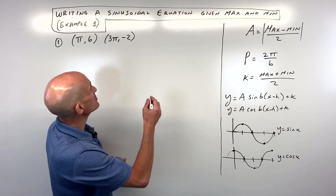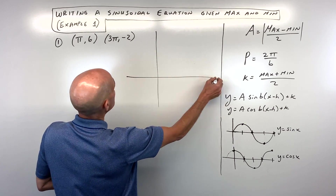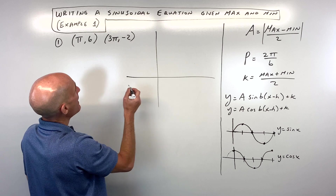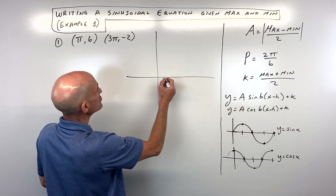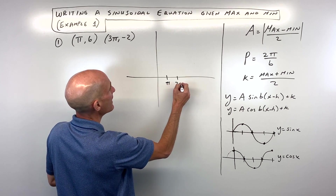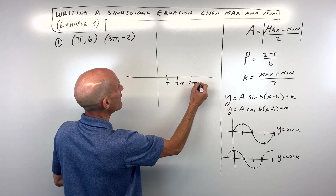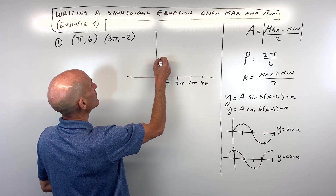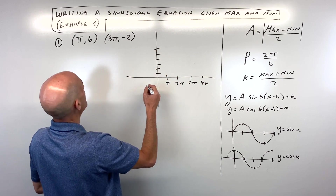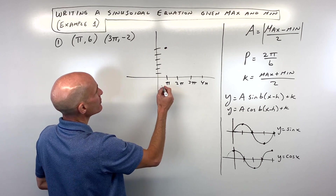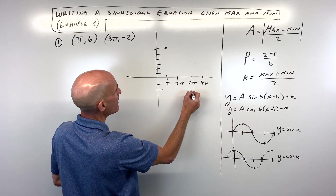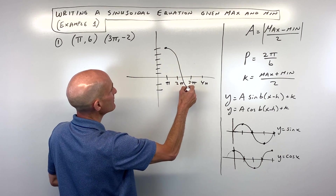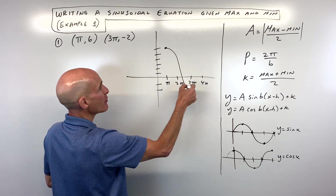The first thing I like to do is draw a sketch. So here what we have is a point at (pi, 6) and (3pi, -2). So let's go ahead and graph this. 1pi, 2pi, 3pi, 4pi. So pi, 6 is right about here. 3pi, -2 is right about here. And you can see the graph is looking something like that.